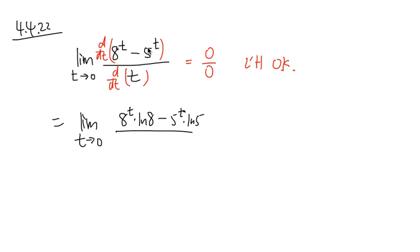Notice that the base is a number. The variable is in the exponent for the exponential functions. The derivative of 8 to the t, you write down 8 to the t first, and then you multiply by ln of the base. That's how we get ln 8 here and the ln 5 right here. And on the denominator, the derivative of t is just equal to 1.